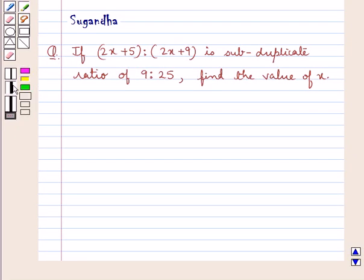Hello and welcome to the session. In this session, we discuss the following question: If (2x + 5) : (2x + 9) is the subduplicate ratio of 9:25, find the value of x.